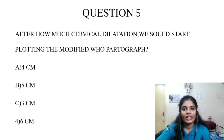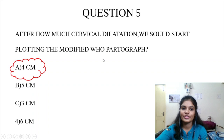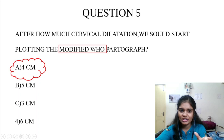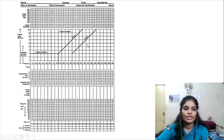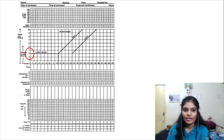Maternal record includes blood pressure, pulse rate, temperature, and urine output. MCQ points on frequency: blood pressure every 4 hours, pulse every 30 minutes, temperature every 2 hours, urine output whenever the patient passes urine. The answer to the question is 4 cm. The old WHO partograph started plotting from 3 cm and included a latent phase. The modified WHO partograph removed the latent phase and changed the start to 4 cm.